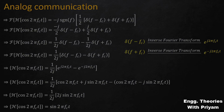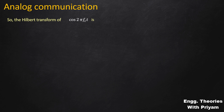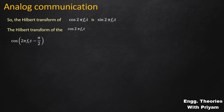So the Hilbert transform of cos(2πf_c·t) is sin(2πf_c·t). This can also be understood by shifting cos(2πf_c·t) by π/2: cos(2πf_c·t − π/2) = cos(−(π/2 − 2πf_c·t)) = cos(π/2 − 2πf_c·t) = sin(2πf_c·t), confirming the result.